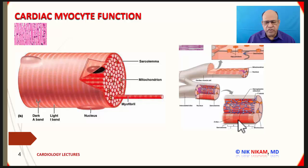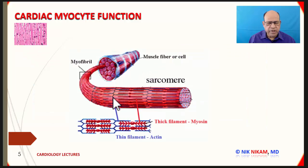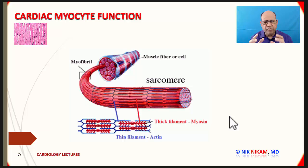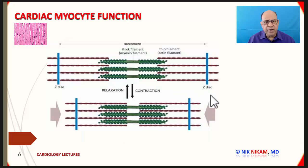It is the actin and myosin complex that creates the shortening of the muscle fibers during an action potential, which causes the ventricle to contract as a single unit. When we look at one unit of light and dark bands, we have the thin filament known as actin and the thick filament known as myosin. Let us look a little deeper into this actin and myosin complex and how it causes shrinkage of myocardial cells individually, which collectively leads to contraction of the entire atrium or ventricle.